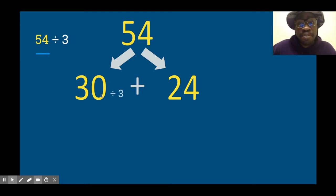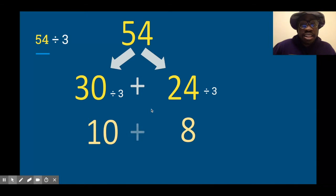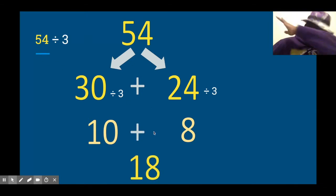I know that 3 times something is going to give me 24 - that's 8. 24 divided by 3 is 8. So 10 and 8 together give me 18. 54 divided by 3 is 18.